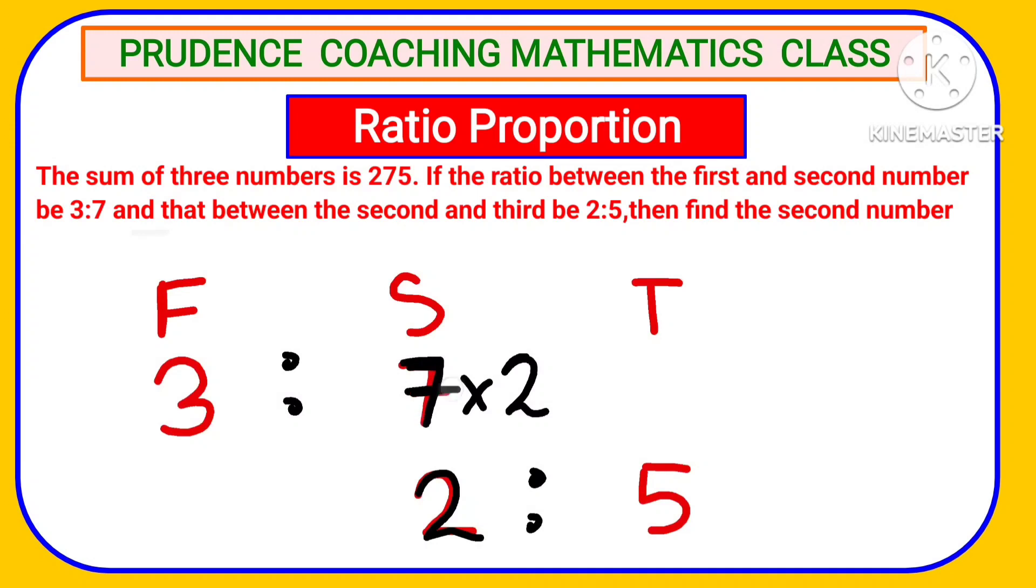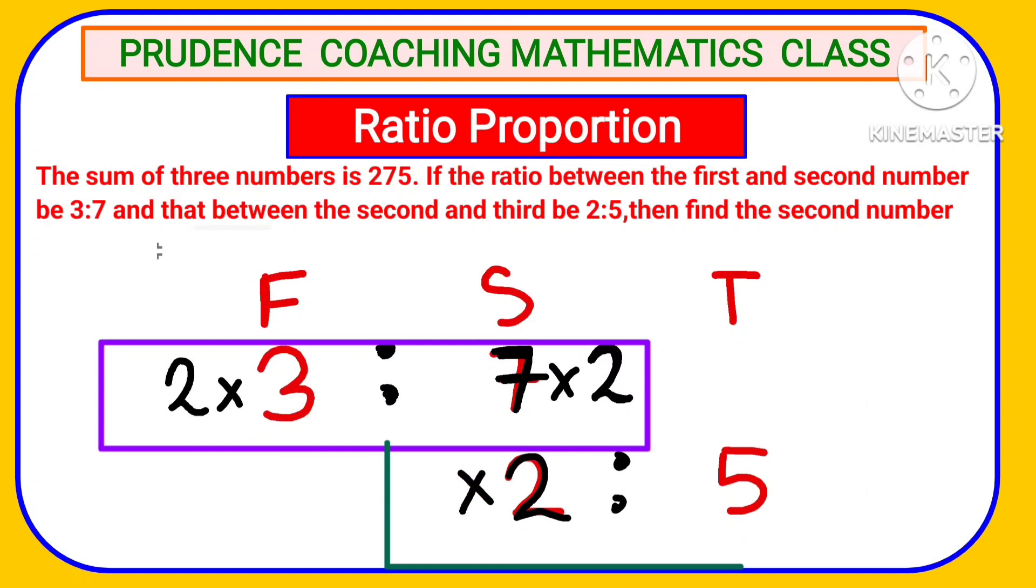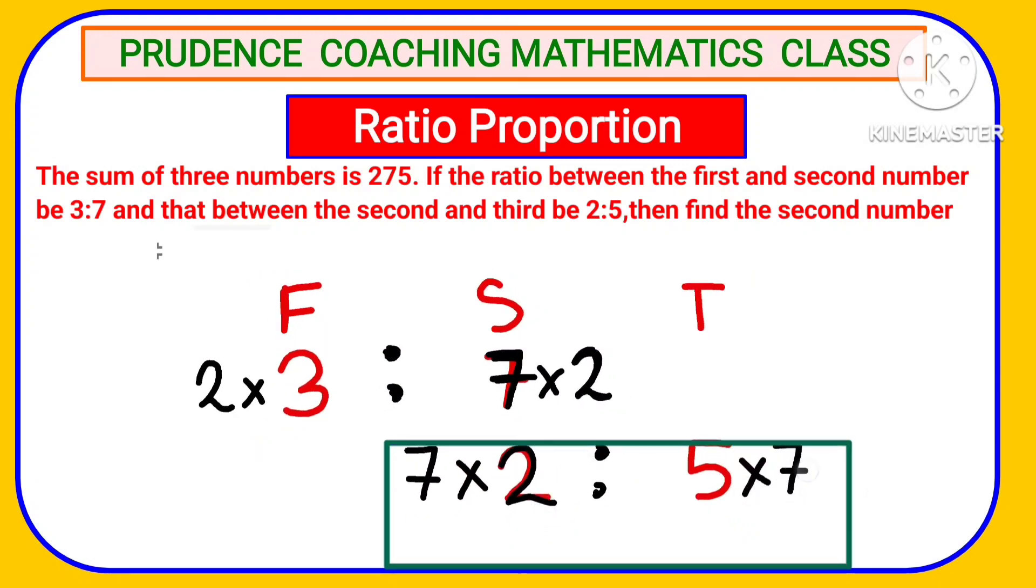So to make the 7 become 14, we need to multiply with 2. So here also we need to multiply with 2 because it is ratio. We need to multiply on both the sides. And here if we multiply 2 by 7, then we will get 14.